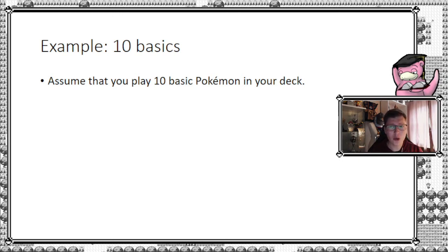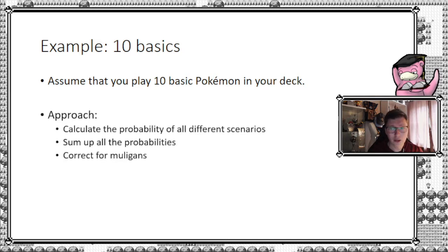For instance, assume you're playing 10 basic Pokemons in a deck. What is the approach? Well, first we calculate the probability of each different scenario, and once we have all these scenarios we can sum them up and correct for mulligans.